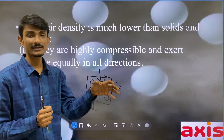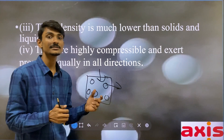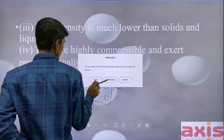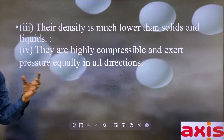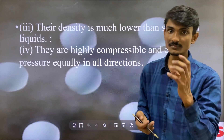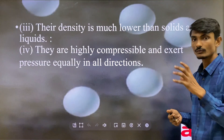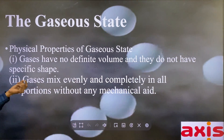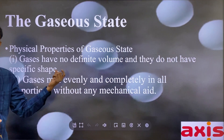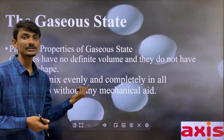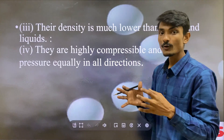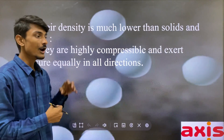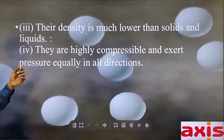To summarize the properties of gases: gases do not have a fixed shape and fixed volume; they occupy the volume of the whole container in which they are present; gases mix completely in all directions without mechanical aid; their density is lower than that of solids and liquids; and they are highly compressible and exert pressure equally in all directions.